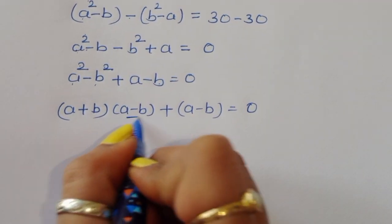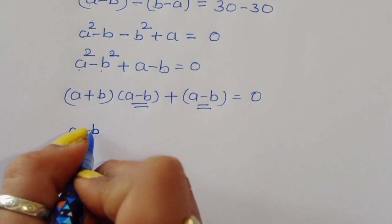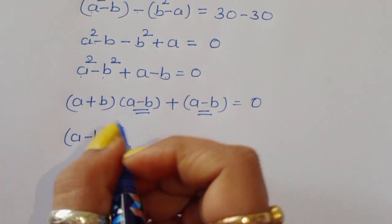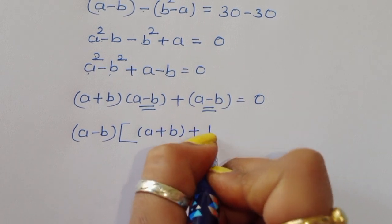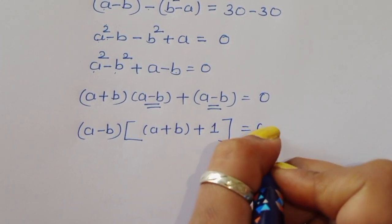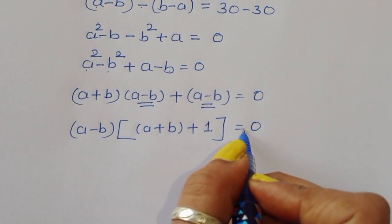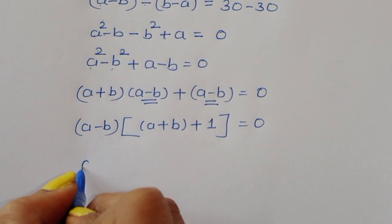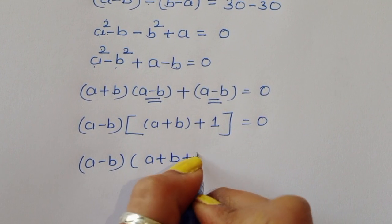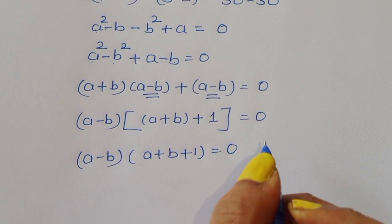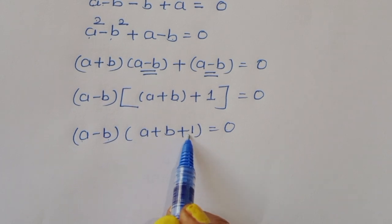Taking (a minus b) as a common factor, we get: (a minus b)(a plus b plus 1) equals 0. So we have two factors: a minus b equals 0, and a plus b plus 1 equals 0.